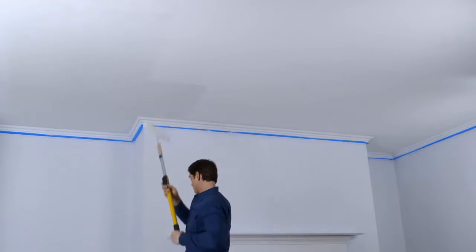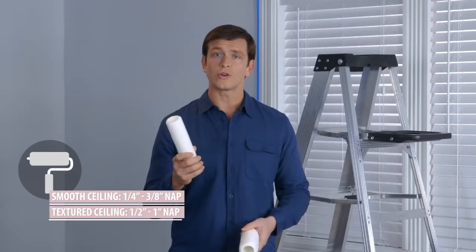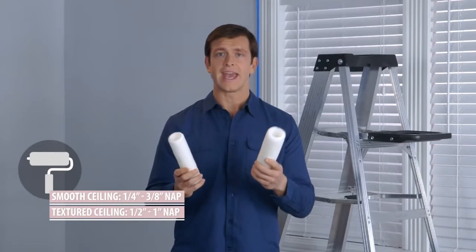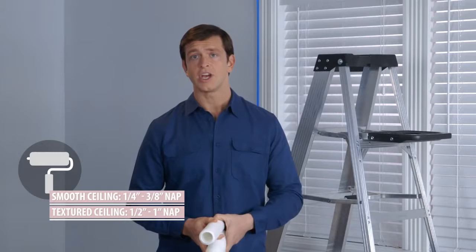If your ceiling is smooth, use a shorter nap roller from one-quarter inch to three-eighths of an inch. If you have a textured ceiling, use a thicker roller nap from one-half inch to an inch.